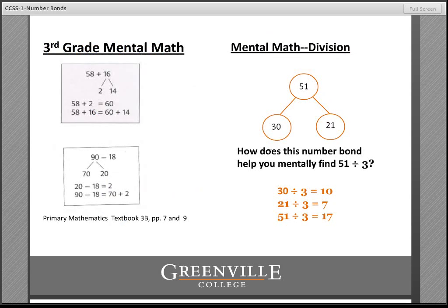Children beyond second grade can continue to use number bonds to see relationships they can leverage with mental strategies. For example, most adults would find it difficult to divide 51 by 3 mentally. However, if you can mentally decompose 51 as a number bond into two parts — 30 and 21 — both of which are divisible by three, the problem becomes easy: three goes into 30 ten times and three goes into 21 seven times, so the answer is 17. Being able to decompose numbers this way in fourth and fifth grade, after years of experience with number bonds, shows how advantageous this approach can be down the road in the curriculum.